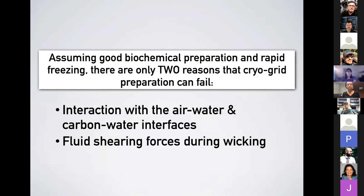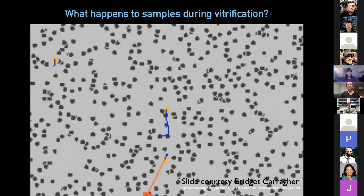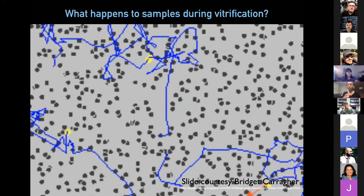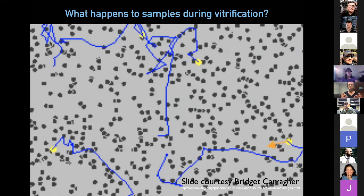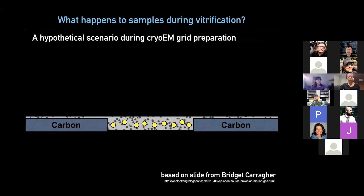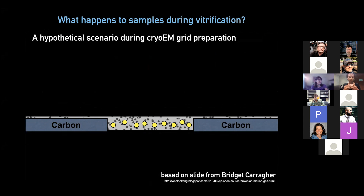Assuming you have good biochemical preparation and your freezing has been optimized, there are really only two reasons your cryo-EM preparation should fail. First, this interaction with the air-water interface in particular, and second, fluid shearing forces during wicking — during the process of blotting away your sample. What you're seeing here are your particles via Brownian motion moving within the liquid buffer applied to the grid. During blotting, you're removing a large portion of that liquid and hoping your sample particles are nicely distributed within the thin layer of liquid left between the holes of the grid.